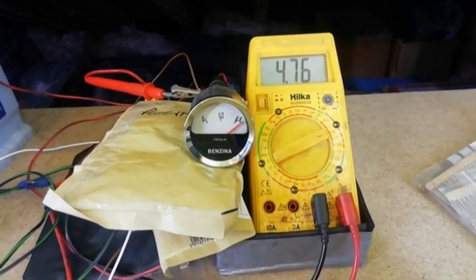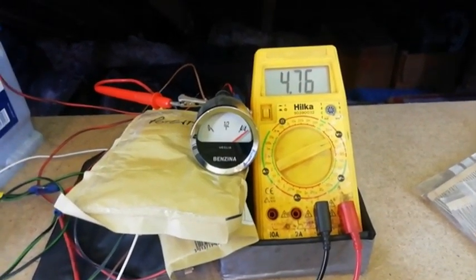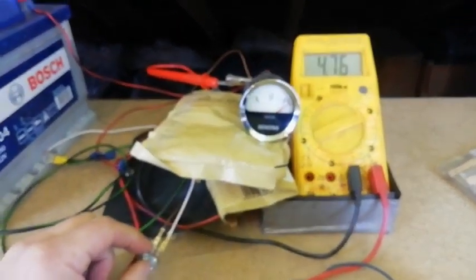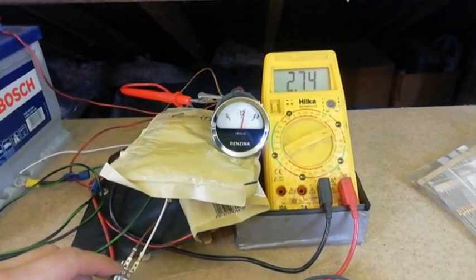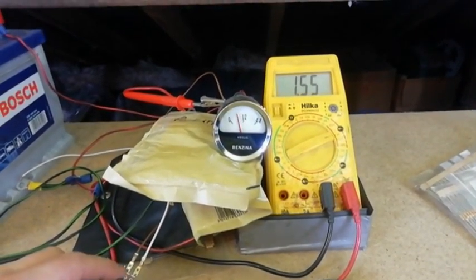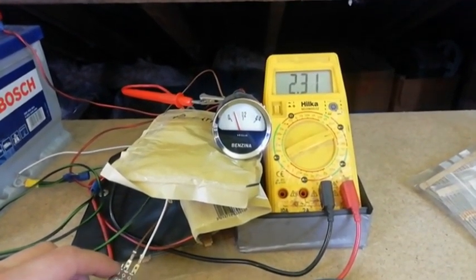I'm showing full scale deflection at 4.75 volts. I'm just going to change the voltage so the reading on the gauge is approximately one-eighth. It's now stabilized at about 2.3 volts.